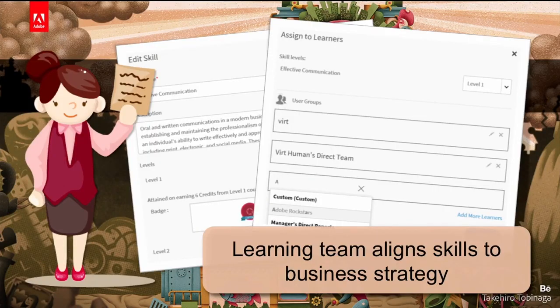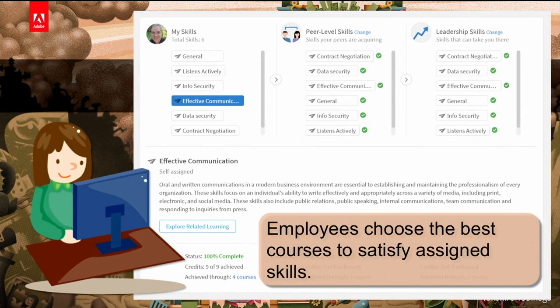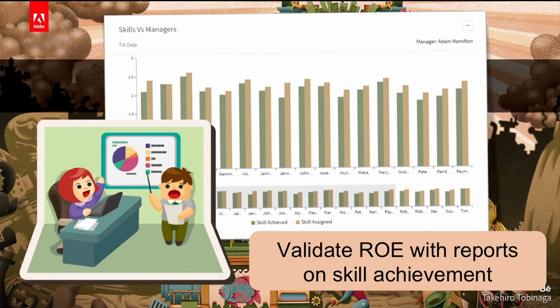We're really much more concerned with aligning with your overall business strategy and succeeding there. We start with that piece, and then move to the learning team assigning skills that align to that business strategy — looking for those skills that align perfectly with the strategy of that specific business unit or business goal. Then it goes to the employees, and it's important to give the employees a sense of autonomy. They can actually choose the best courses to satisfy the skills that they've been assigned. The learning team assigns the skills, and based on those skills, employees are able to make their own selections about courses and training. Then finally, you want to validate that return on expectation with reports on skill achievement.